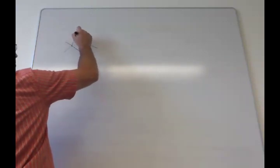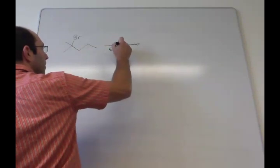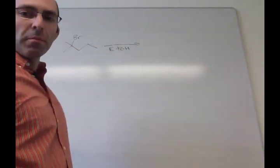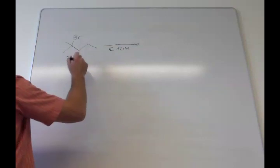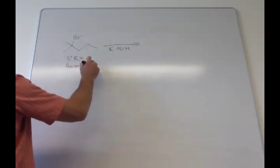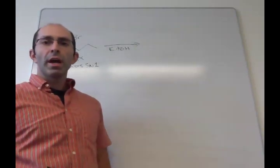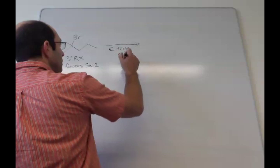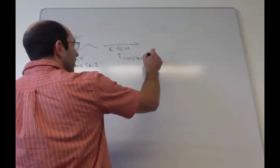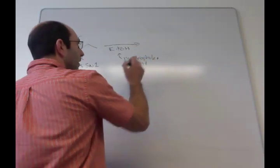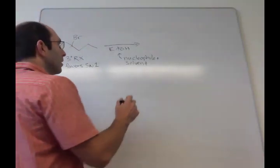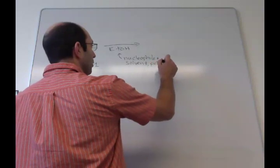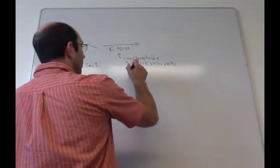So example number one. All right, so here's an example where we have, look at the Rx, tertiary Rx, favors SN1. You'll note that we only have one reagent under the arrow. So this is both our nucleophile and the solvent. And this is very common for SN1 reactions where the solvent and a nucleophile are the same molecule.